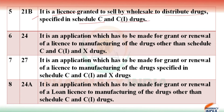What about Form 24? It is an application which has to be made for grant or renewal of a license for manufacturing of the drug. It is about manufacturing, specifically for Schedule C and C1 drugs.